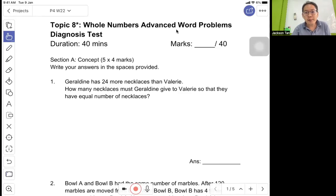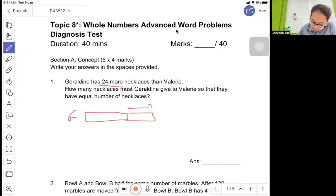Hello, I'm Setan. Today we are doing Part 4 Topic on Whole Numbers Advanced Word Problems Test. Question 1: Dreading has 24 more necklaces than Barely. How many necklaces must Dreading give to Barely so that they are equal? So Dreading has 24 more than Barely. Half of it, they will be equal. Therefore, divide by 2 equals 12.